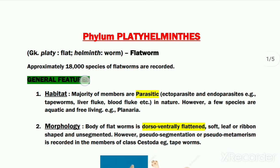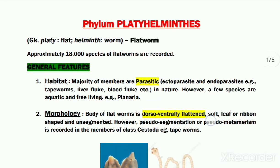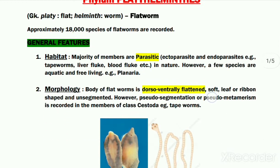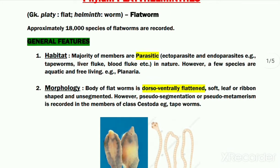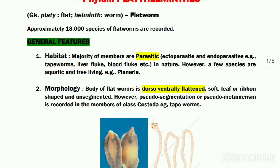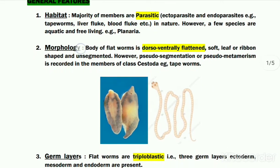First, let us take a look at the general features or general characteristics of this phylum. The first is their habitat. Most of the members of this phylum are parasites, meaning they either live as ecto or endoparasites on other organisms or on their host. However, few species of flat worms are free living as well.